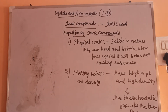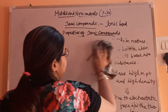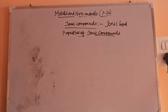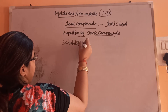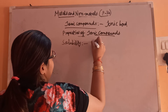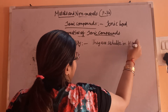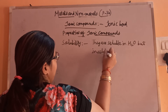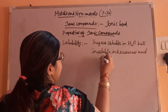Next property is solubility. Ionic compounds are soluble in water, but insoluble in kerosene and other organic solvents.